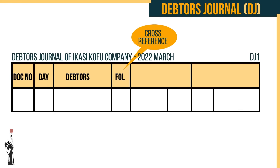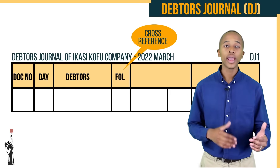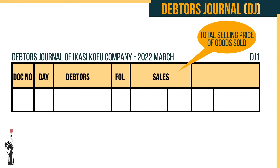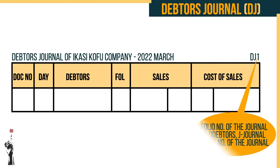The folio column shows the number of the account in the debtor's ledger — this will make more sense when we cover the debtor's ledger later. Fifth, in the sales column we record the total selling price of goods sold on credit. Sixth, the cost of sales column shows the total cost for the goods sold — this can be given or you may be required to calculate it.